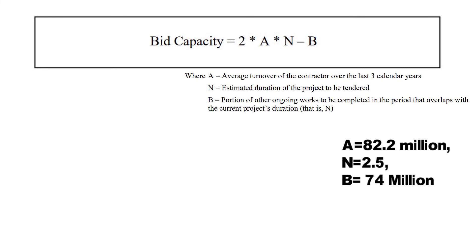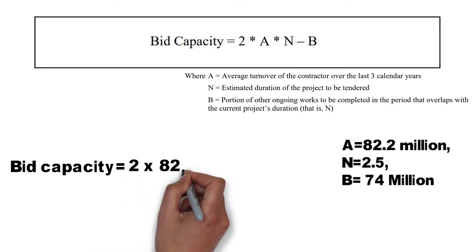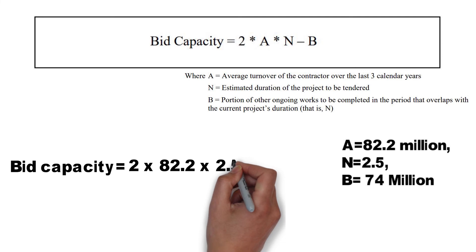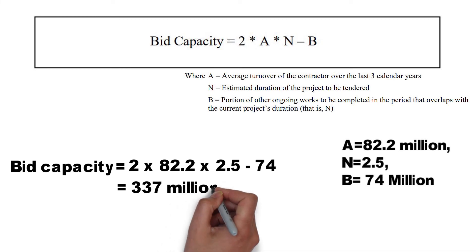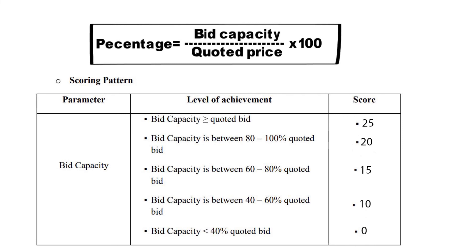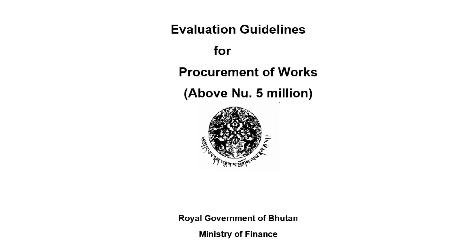Therefore, bid capacity in this case will be equal to 2 × 82.2 × 2.5 − 74, which equals NU 337 million. Compare this amount with the quoted value of the contractor for the tendered work. A contractor can score anywhere between 0 and 25 depending on how close his bid capacity is to his quoted price. Hope this video was helpful to understand the calculation of bid capacity. Please refer to the evaluation guidelines for more details.